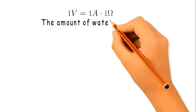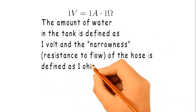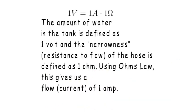The amount of water in the tank is defined as 1 volt, and the resistance to flow of the hose is defined as 1 ohm. Using Ohm's law, this gives us a flow of 1 amp.